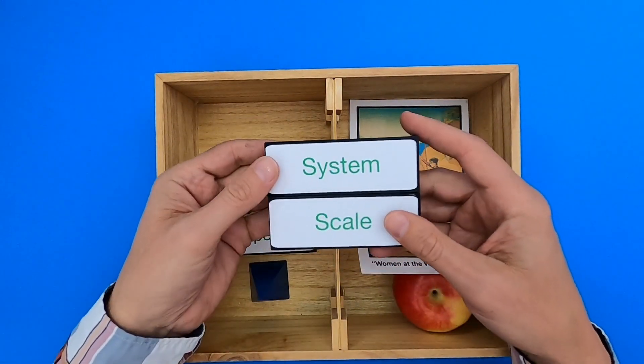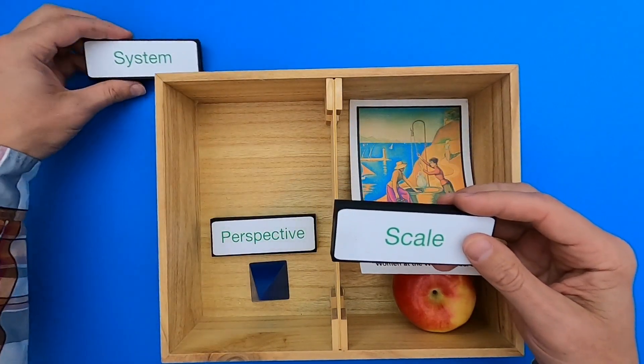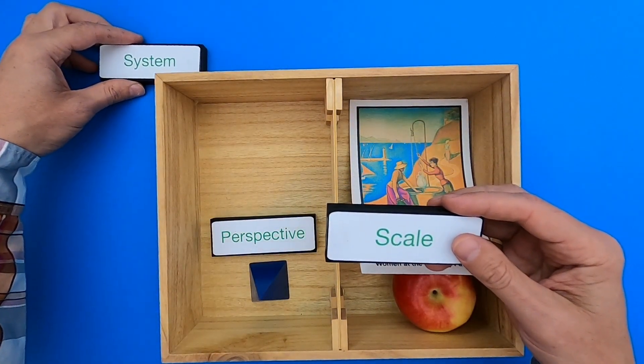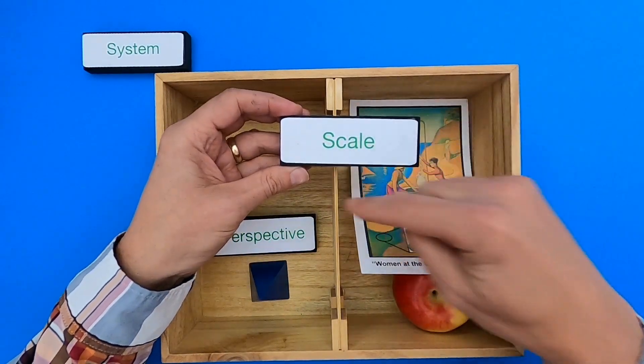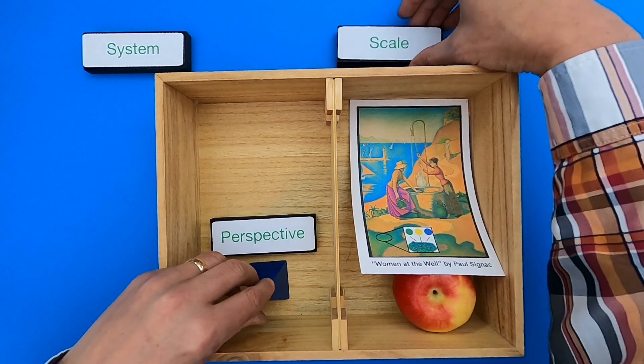The big thing we should always do when we're trying to determine perspective is first decide on the system. What system are we going to investigate and then within that system, what scale are we going to be? Are we going to be at the small scale or the very large scale?